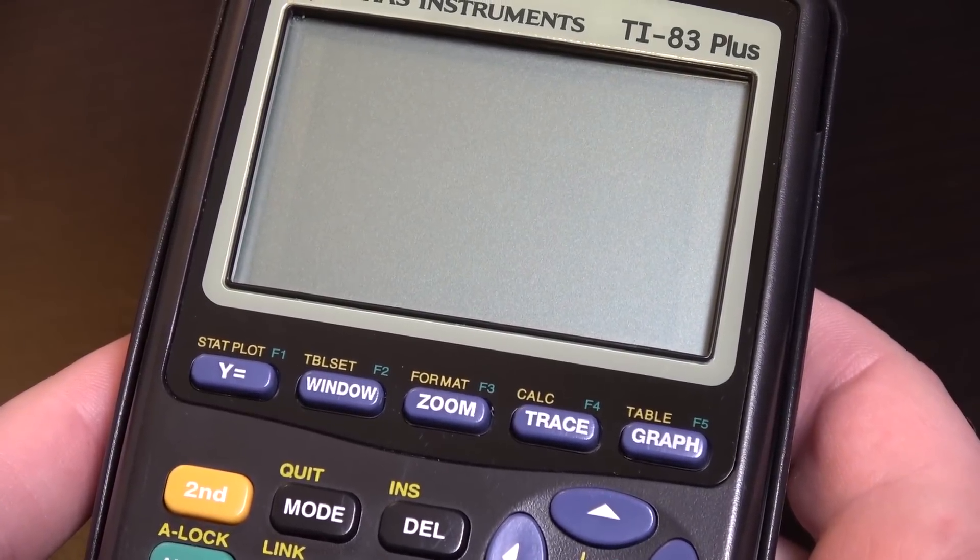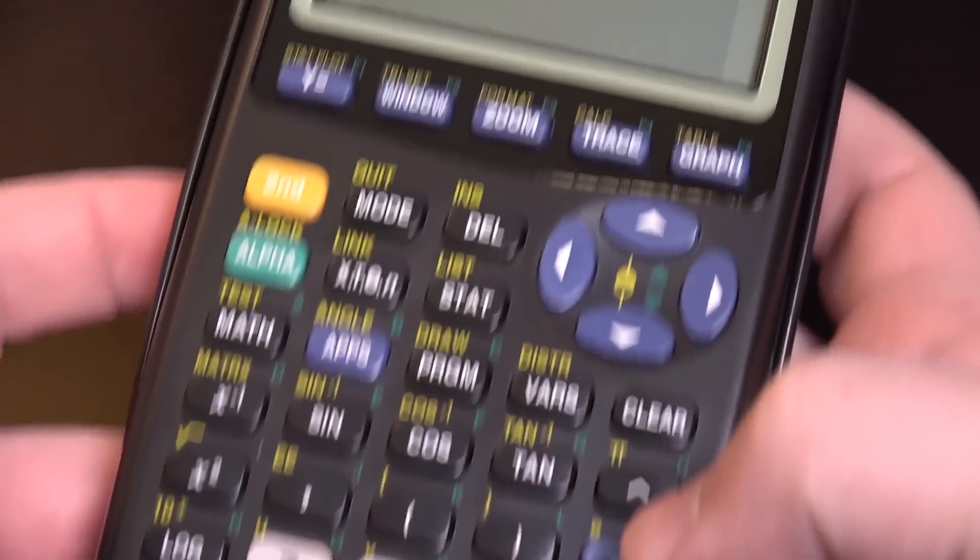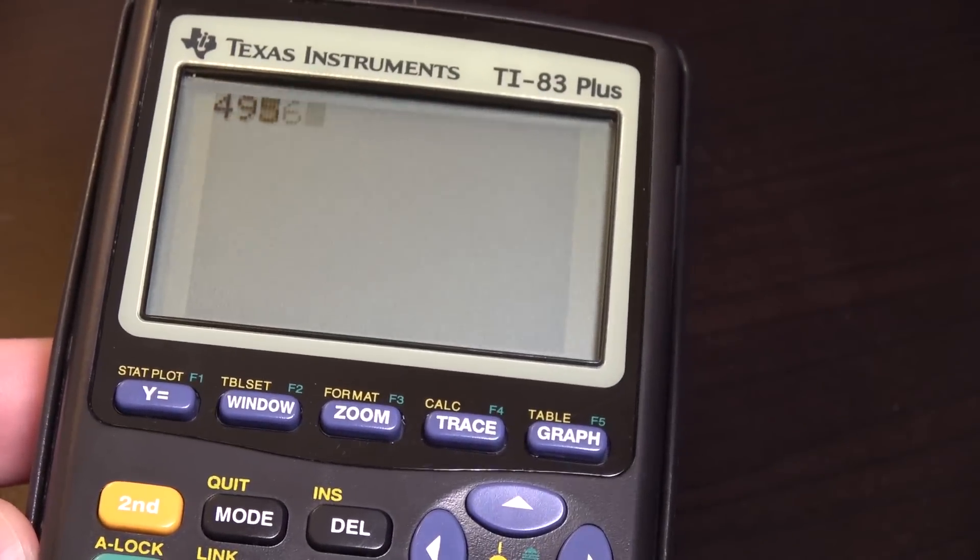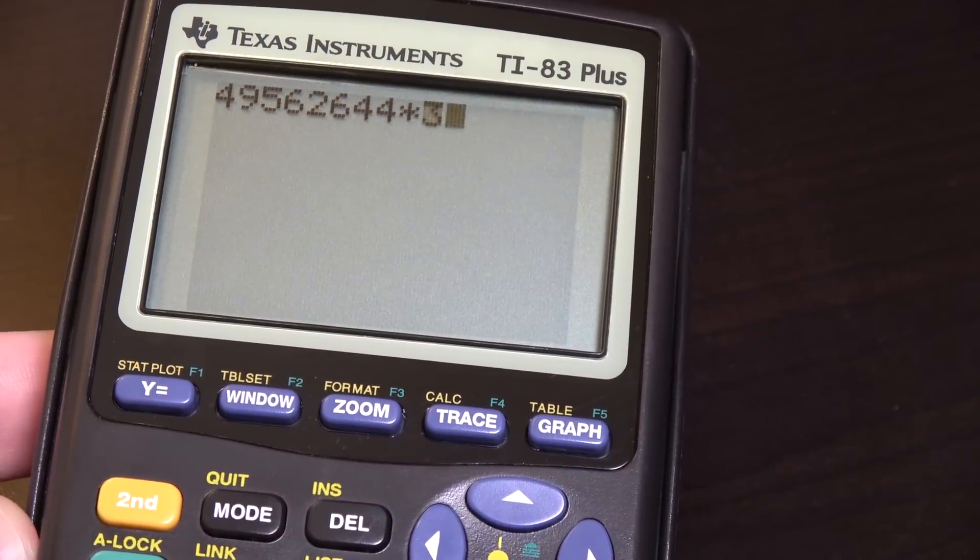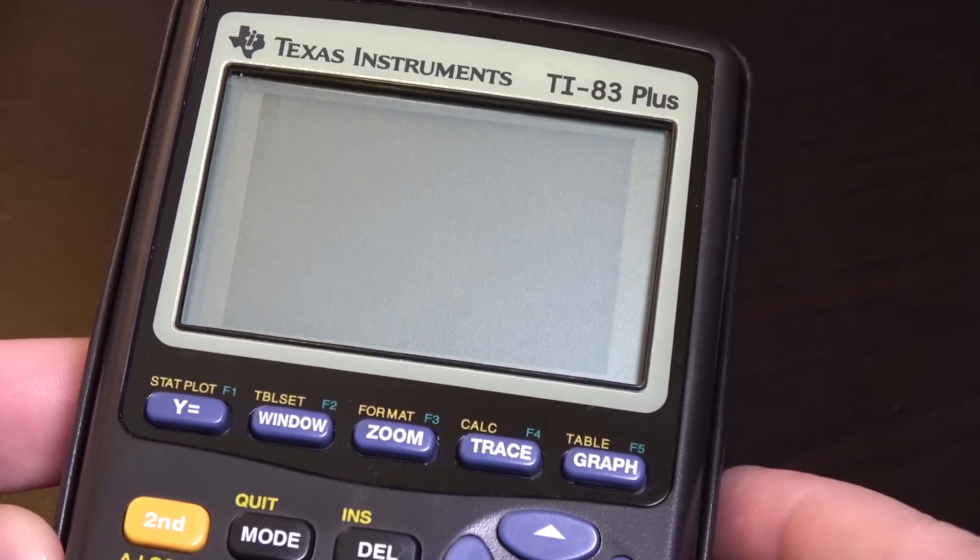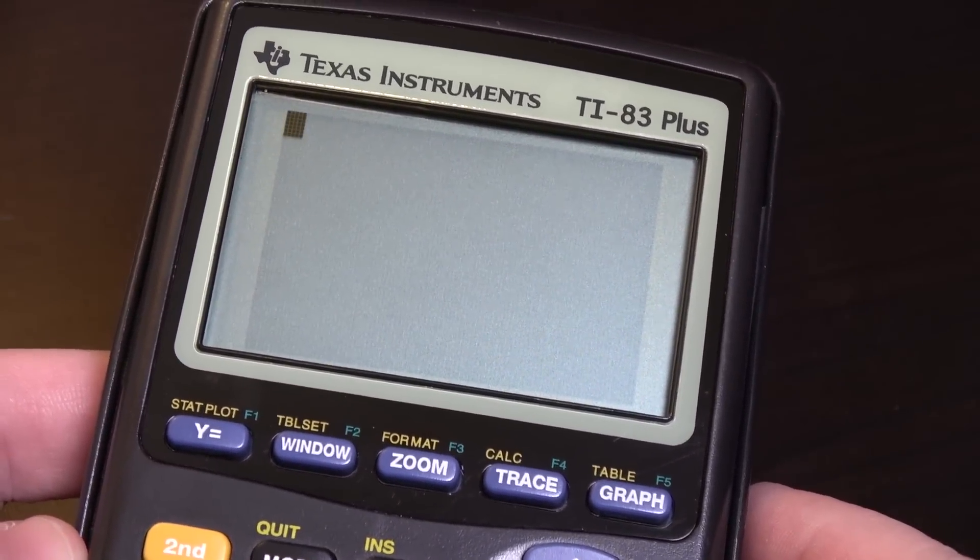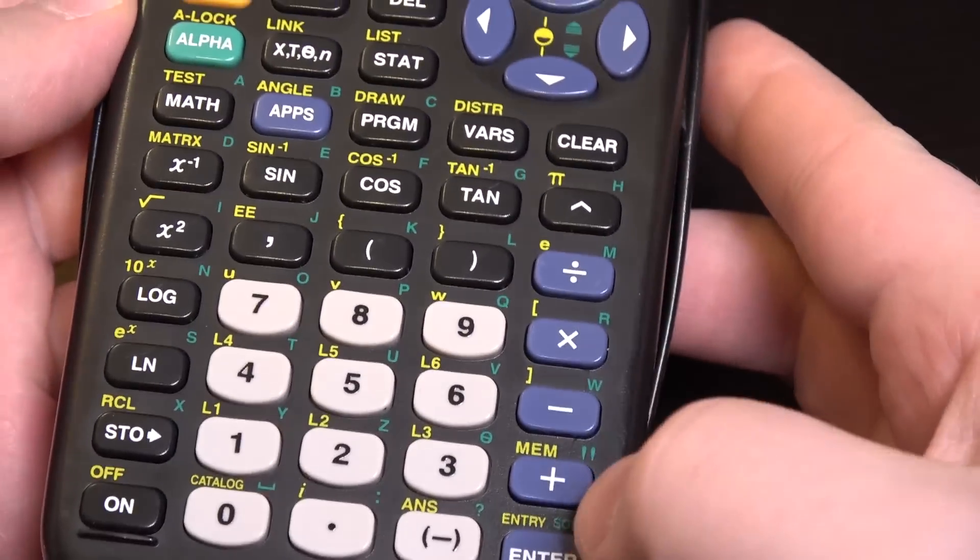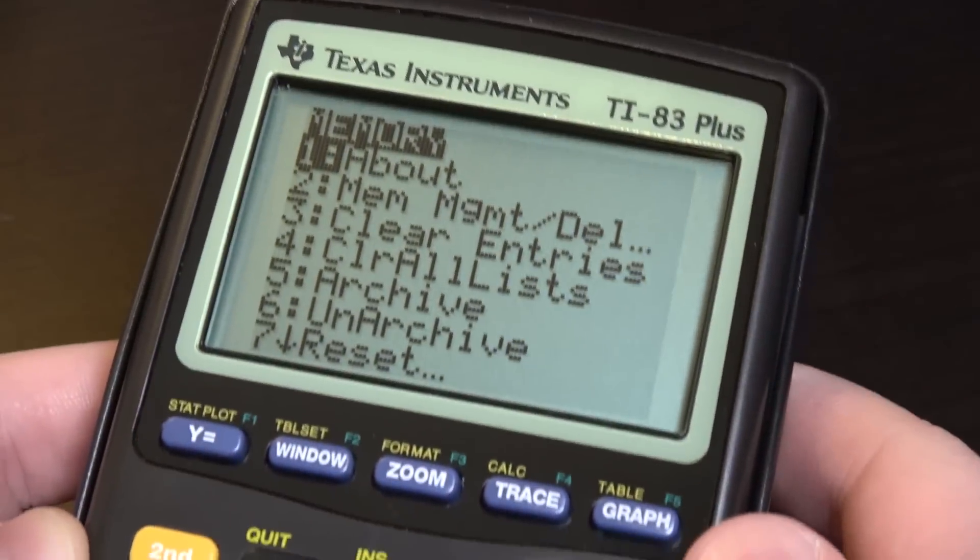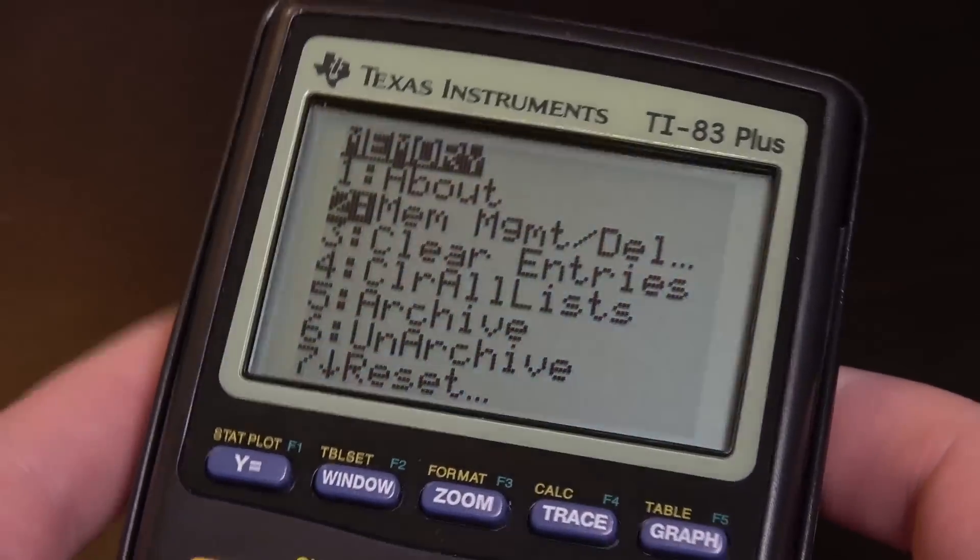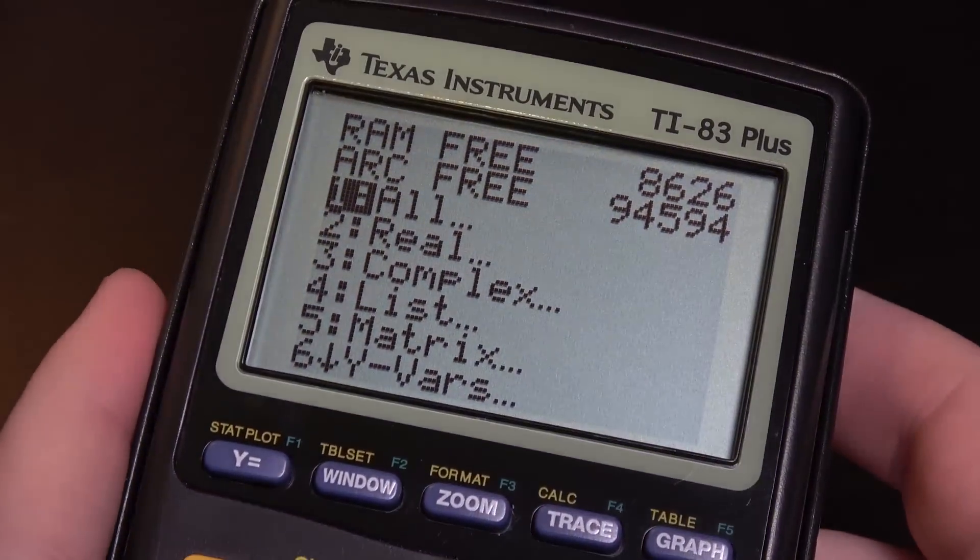Okay, now that I've got some software on there, I'm going to go ahead and turn it on. Which just brings us to the normal cursor there, which lets us do calculator-y things and whatnot. But who really cares? What we really want to do here is check out what's installed. And make sure everything's good. So press the second button here and then MEM right down there, which brings us to this menu.